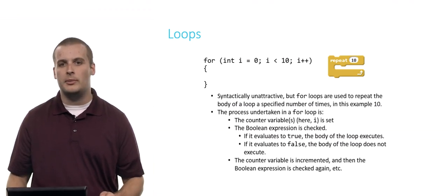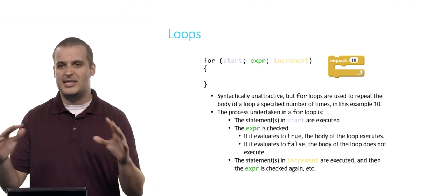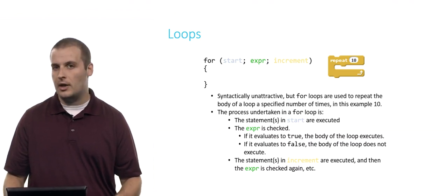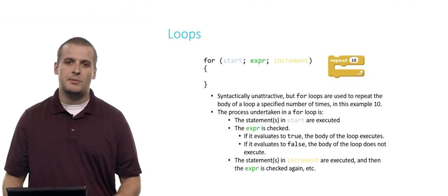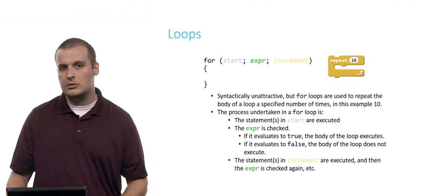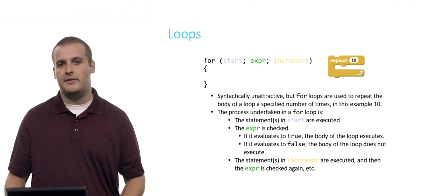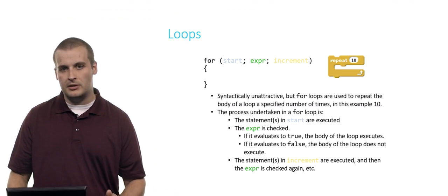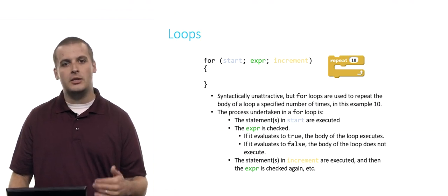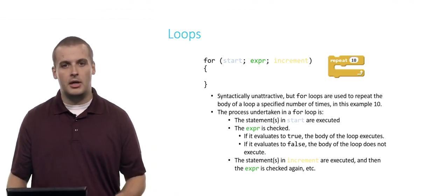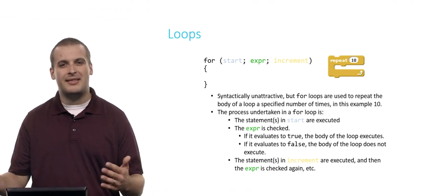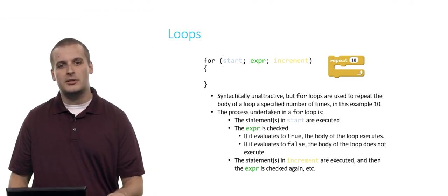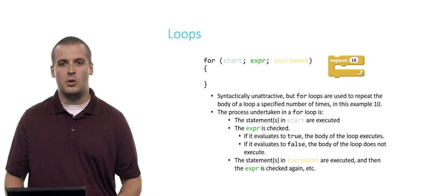And so that's basically the process for a for loop. Now taking away the actual code and putting it in some general statements, here's what happens. All of the statements in start are executed first. You might have more than one. Then the Boolean expression is checked. If the expression evaluates to true, execute the body of the loop one time. If the expression evaluates to false, we're done. We don't execute the body of the loop at all. After we've executed the body of the loop one time, we then do what is in the increment part there, which is usually going to be something like i plus plus or something that modifies a counter variable. Then after we increment, we check the expression again and repeat those steps over and over until the expression is no longer true.